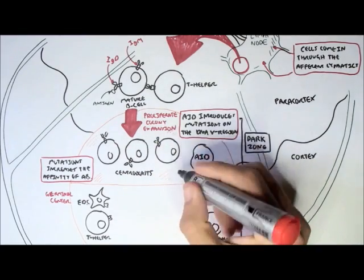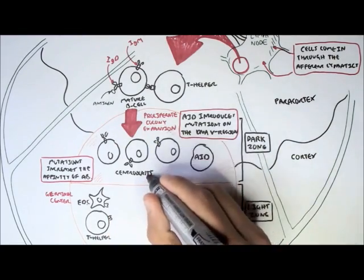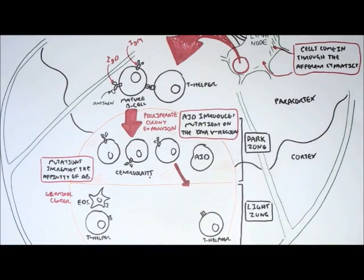Now what happens is, the centroblasts will move from the dark zone into the light zone, where they will become centrocytes.